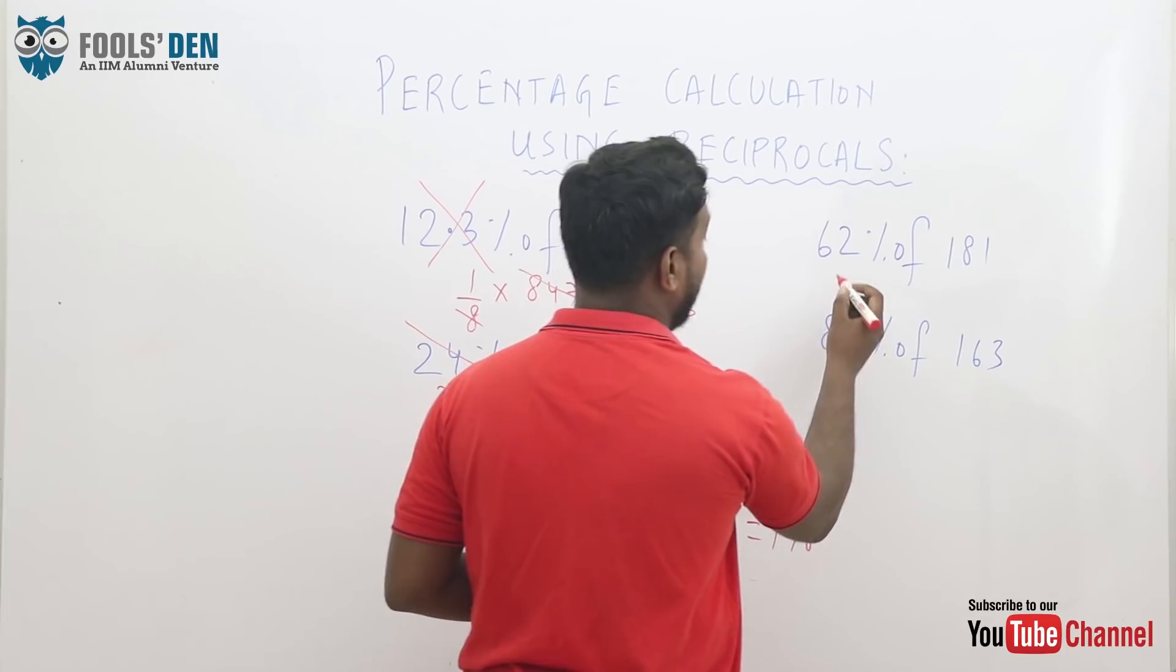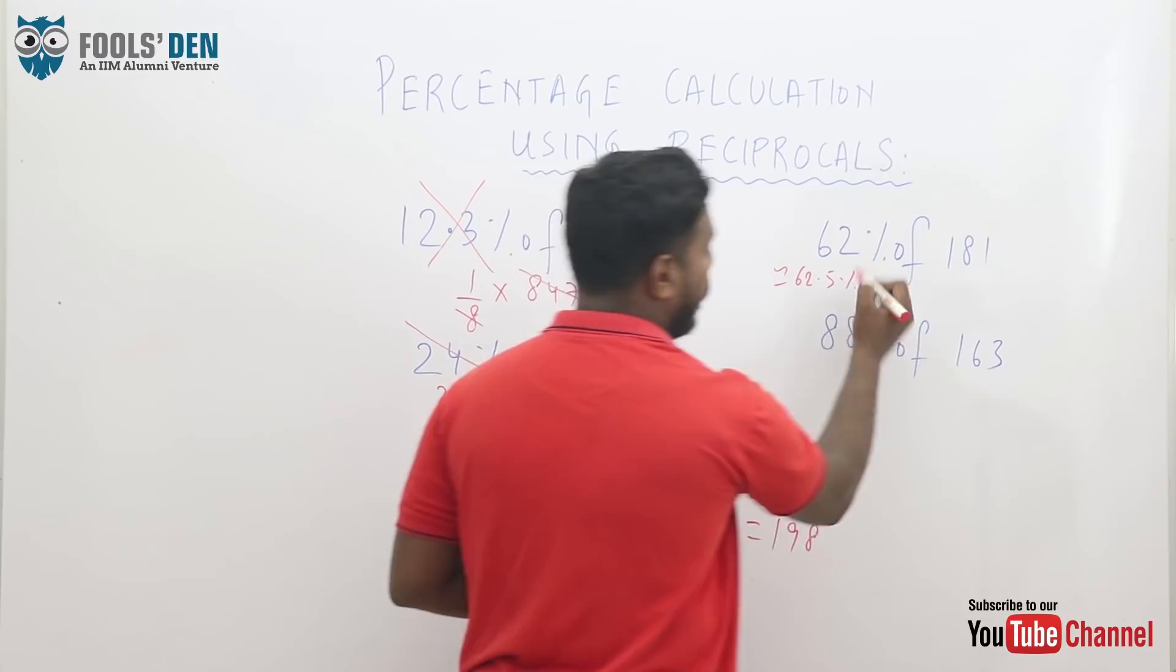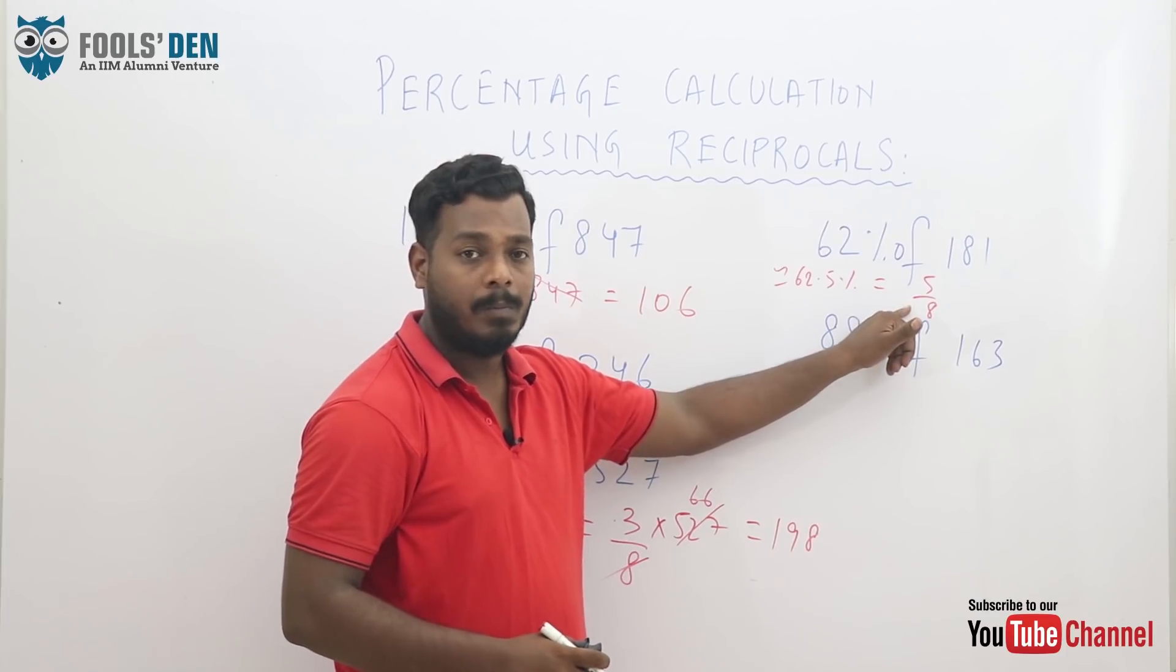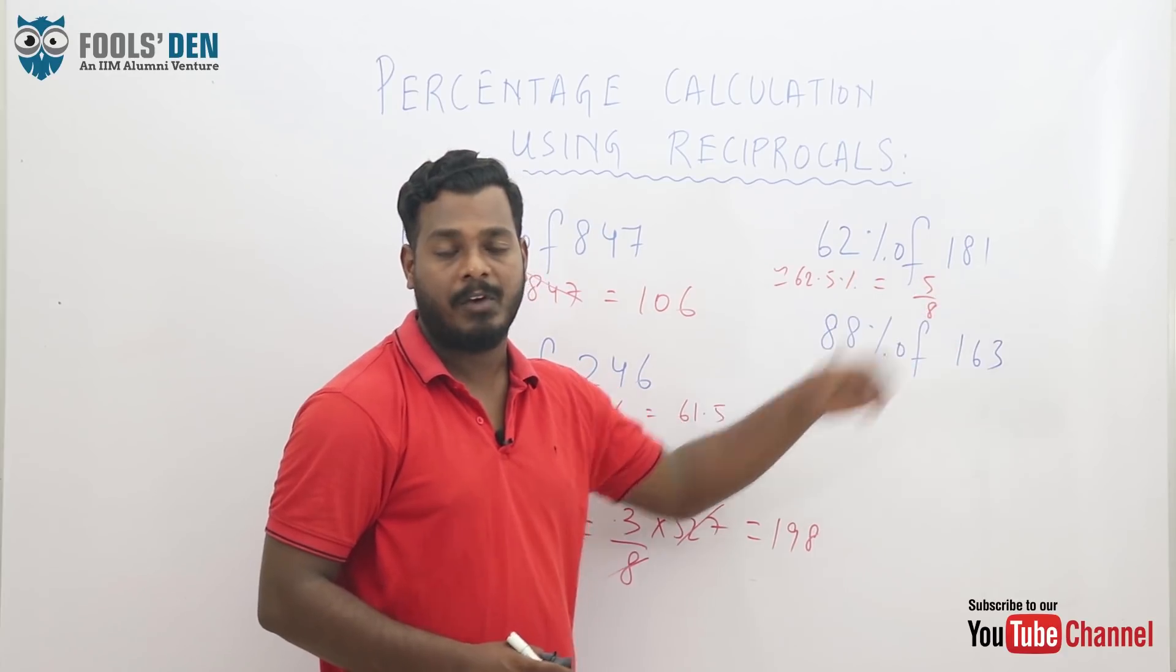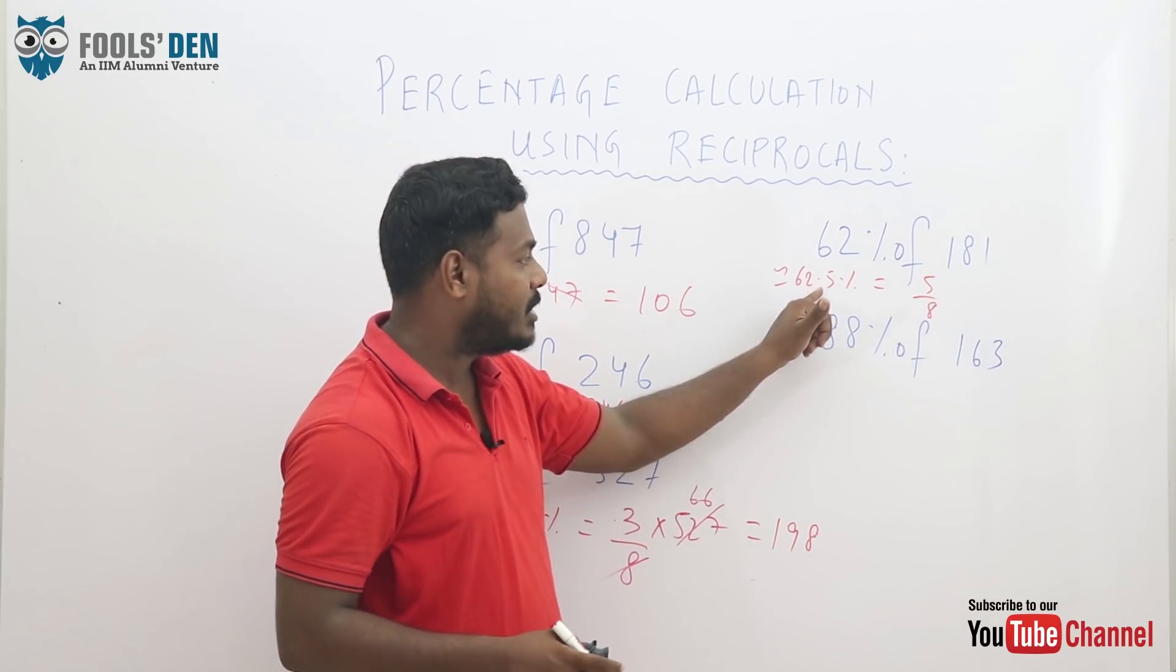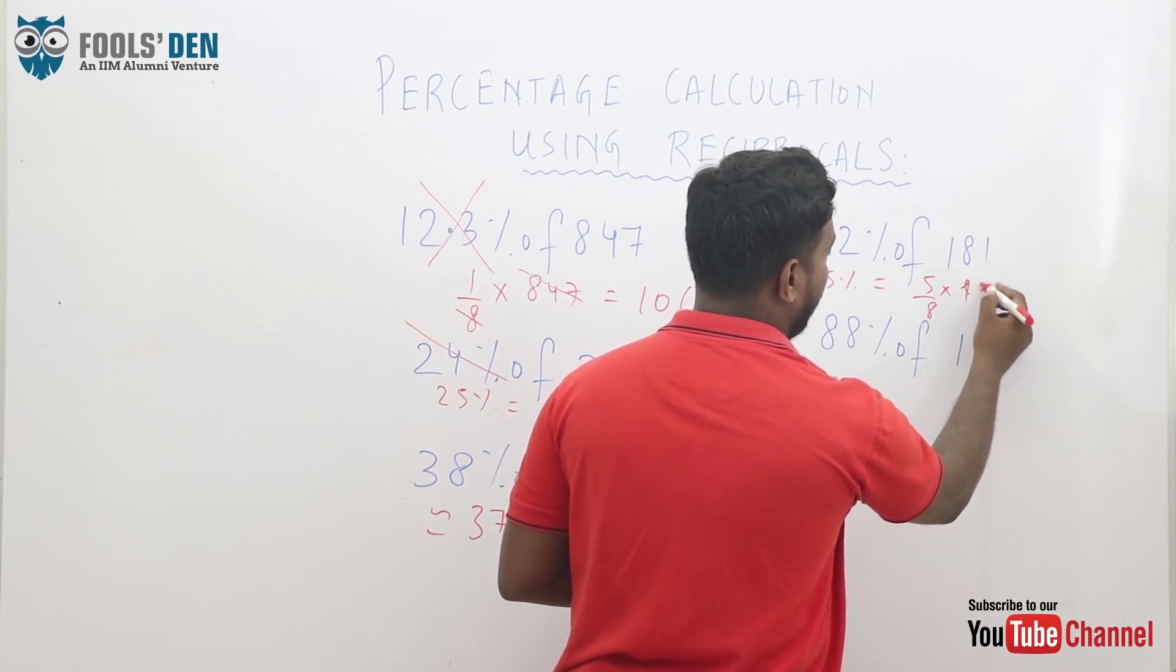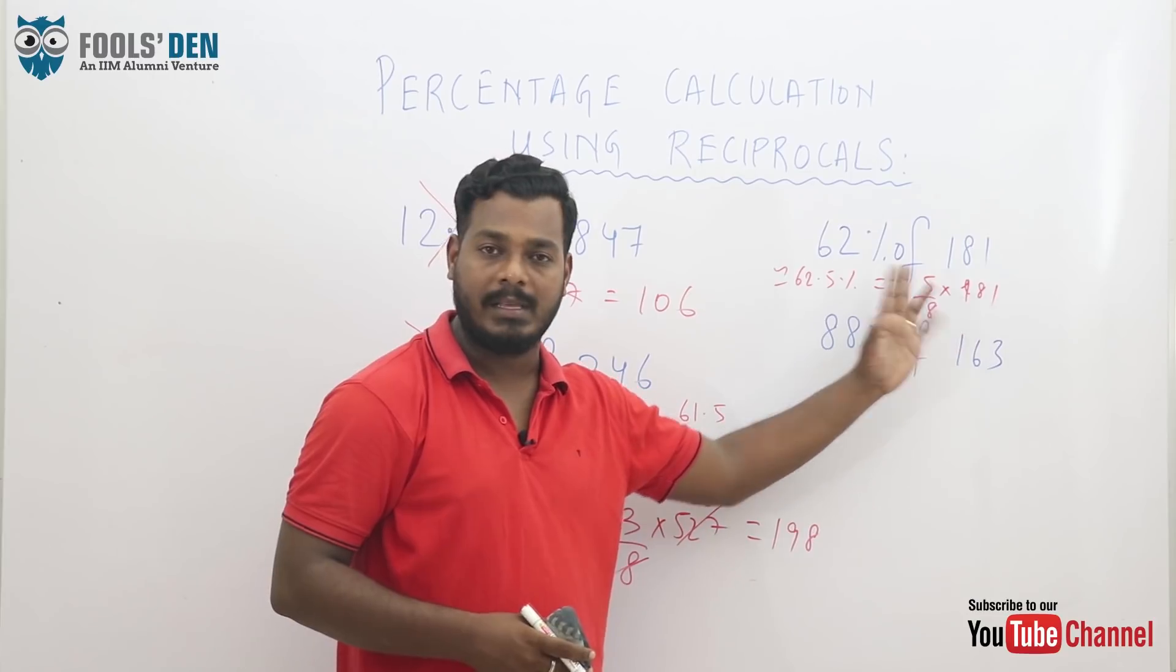Similarly, 62% again using reciprocals. This can be approximated to 62.5% which is nothing but 5 by 8. Another very standard and important value. 62.5% is 5 by 8. How did I do it? Same concept. 1 by 8 is 12.5. Multiply it by 5, you will get 62.5 which is 5 by 8. So again, this is equal to this and 5 by 8 of 181 can be calculated easily. You can calculate this quite easily.